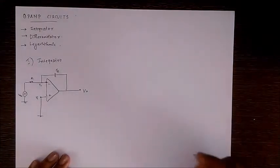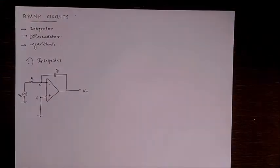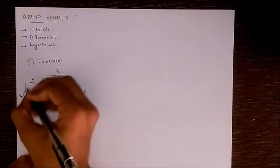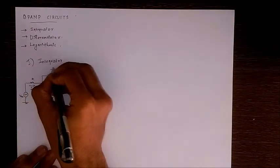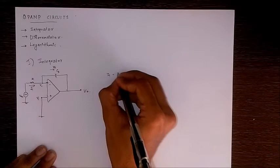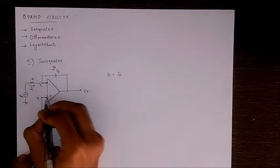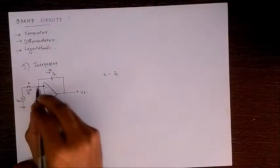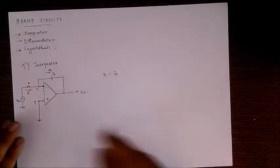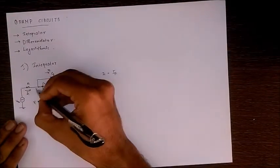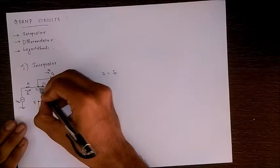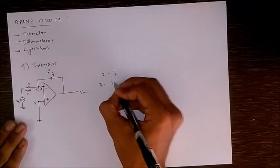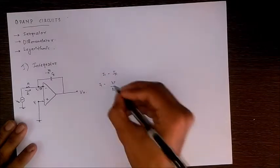Now we have to find out the gain of this circuit. Applying virtual short and the principle of zero current, we can see that if this is I1 and this is IF, then I1 is equal to IF because no current is drawn by the op-amp. I1 is the potential difference divided by the resistance. Here V1 is 0V, so applying virtual short, V2 would also be equal to 0V. So the current I1 equals VI divided by R1, or VI minus 0 by R1.